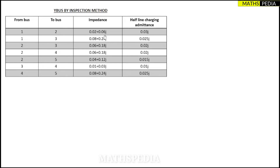Note that impedance is given here, not admittance. Remember, Y-bus matrix elements should be in admittance form. Also, half line charging admittance is given, so you can take that admittance directly. Sometimes full line charging is given, in which case you divide by 2 then add it.